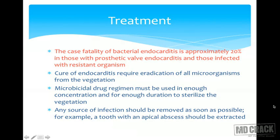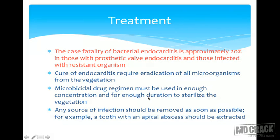The case fatality of bacterial endocarditis is approximately 20%, and is higher in those with prosthetic valve endocarditis and resistant microorganisms. Cure requires eradication of all microorganisms from the vegetation. A microbicidal drug regimen must be used in enough concentration and for enough duration to sterilize the vegetation. Any source of infection should be removed as soon as possible — for example, a tooth with apical abscess should be extracted.